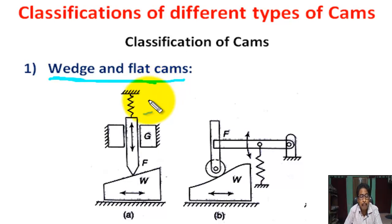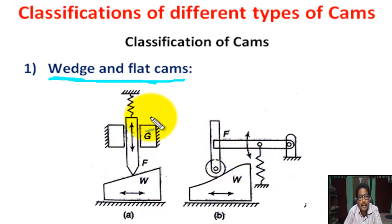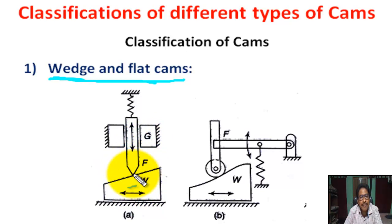This cam has a wedge W to transfer motion given to the follower F. Here, this is the wedge, this is the follower, this is the guide. This is a knife-edge follower. Here, this is the wedge shape cam with a curved surface.